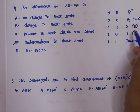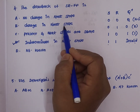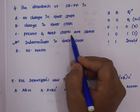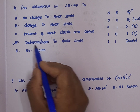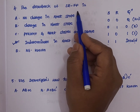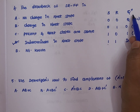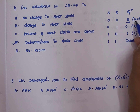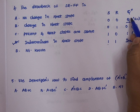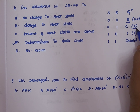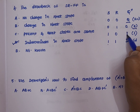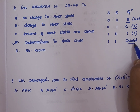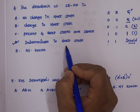The other options are not correct: no change in next state is available (S=0,R=0 gives no change), and change in next state is available for other input combinations. Present and next states being the same is not applicable here. The indeterminate next state when S=R=1 is indeed the drawback, so option D is the correct answer.